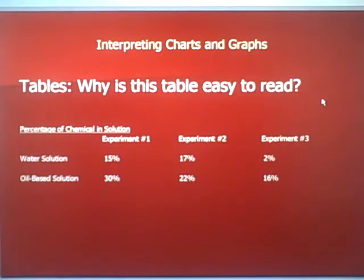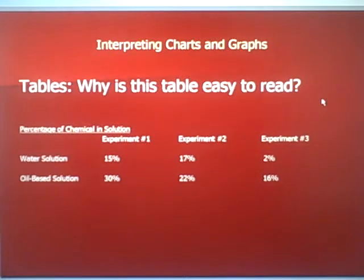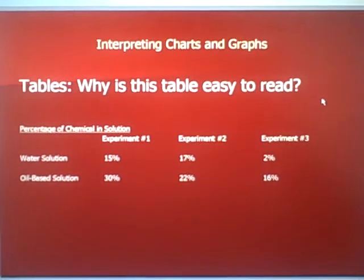The prior slide was a chart; this is a table. Why is this table easy to read? The heading says 'percentage of chemical in a solution.' It shows three experiments and two different types of solutions for each experiment. Think about that while we go to the next slide.